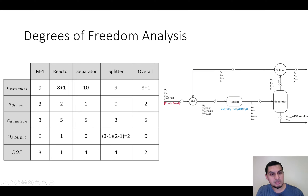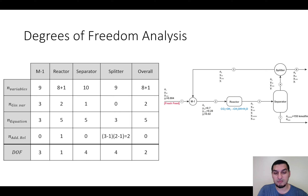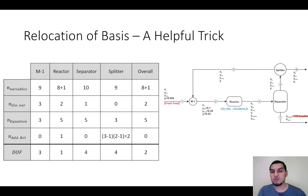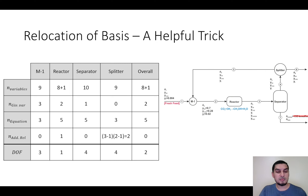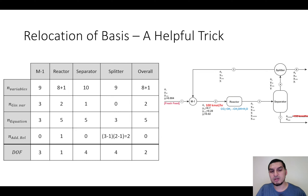By assuming the flow rate in stream two, we can solve the reactor, then the separator, then partially solve the splitter, then solve the mixer, and go back to complete the splitter. What we are going to do is what I call the 'relocation of basis.' We will assume that the methanol product flow rate is not a given variable for now — we'll come back to it later — and instead place the basis in stream two, which makes the process solvable in a straightforward way.